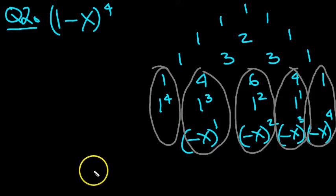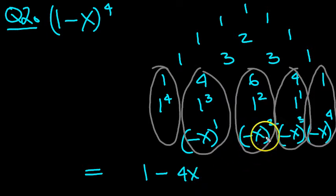So let's write them down then. So this is equal to, this is 1 to the 5, which is just 1. This is a minus x, just 4 lots of, isn't it? So that's minus 4x. Next one, minus x squared will be plus x squared, won't it? Minus times a minus. 6 lots of, so it's plus 6x squared.